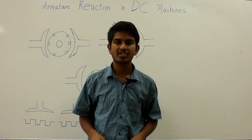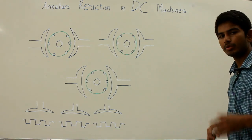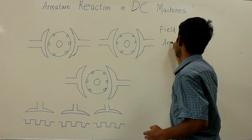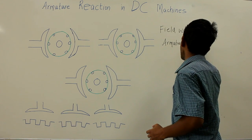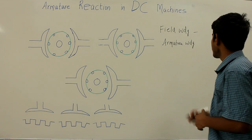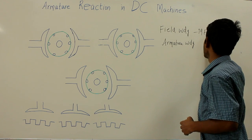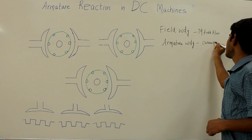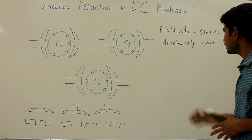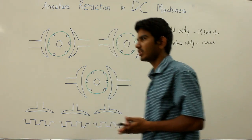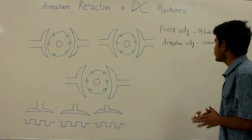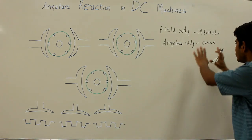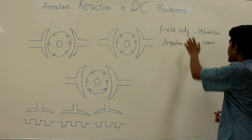In this video let us understand about armature reaction in DC machines. Any DC machine has two windings: one is the field winding and the other one is the armature winding. The purpose of the field winding in DC machines is to produce the main field flux, whereas the purpose of the armature winding is only to carry the current.